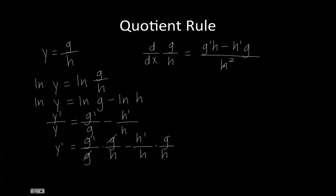Notice how here order matters, because g prime h minus h prime g is not equal to h prime g minus g prime h, which is one difference between the quotient rule and product rule.